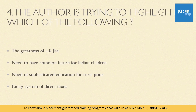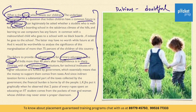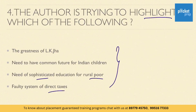The last question: the author is trying to highlight which of the following? The solution should be clear if you understand the topic sentence: 'what is the future which awaits our children?' The author is showing hesitation about the future of our children and the entire passage is related to that. Therefore the best option is: the author is trying to highlight the need to have a common future for Indian children. Hope you have understood this lecture — pay attention to the tips given. All the very best!